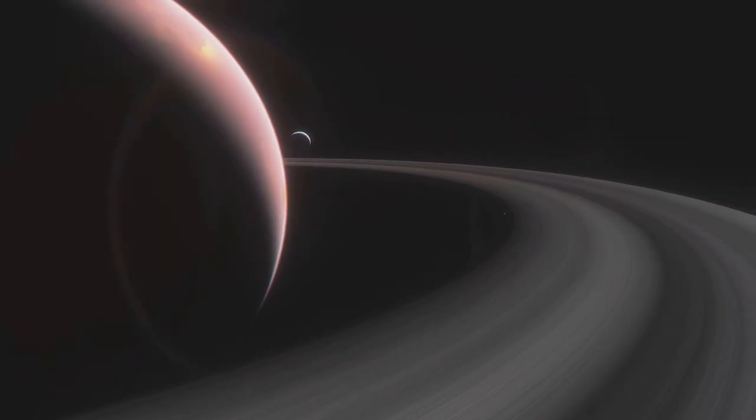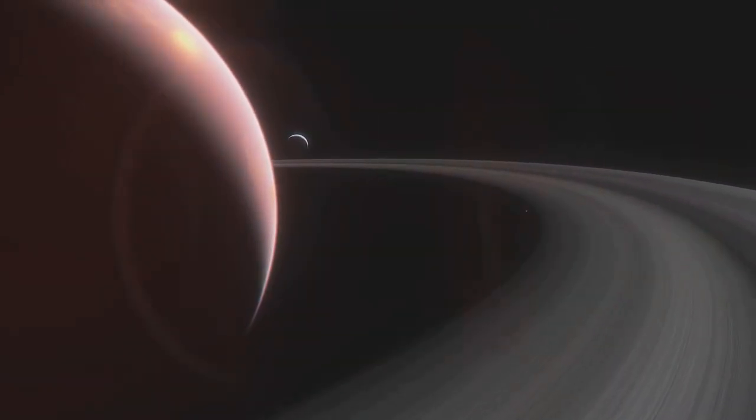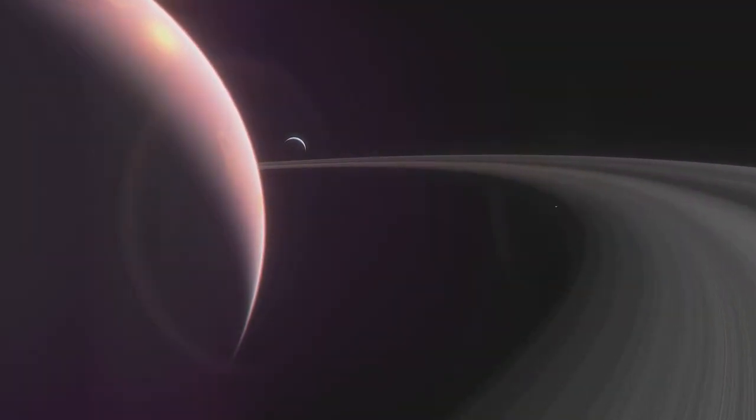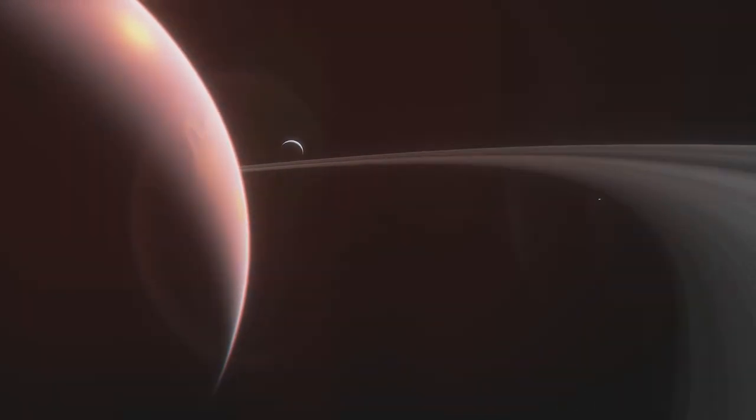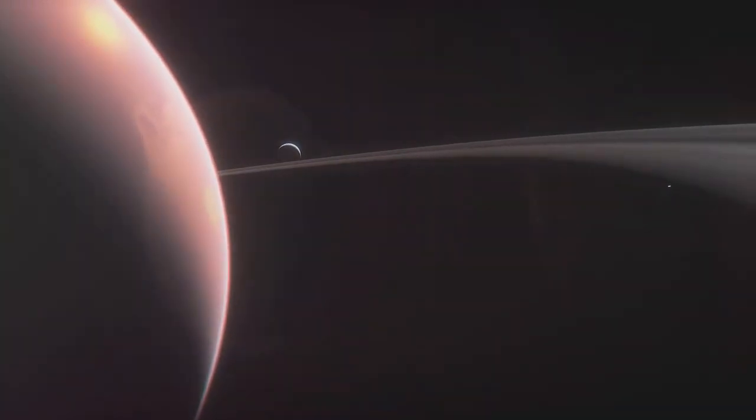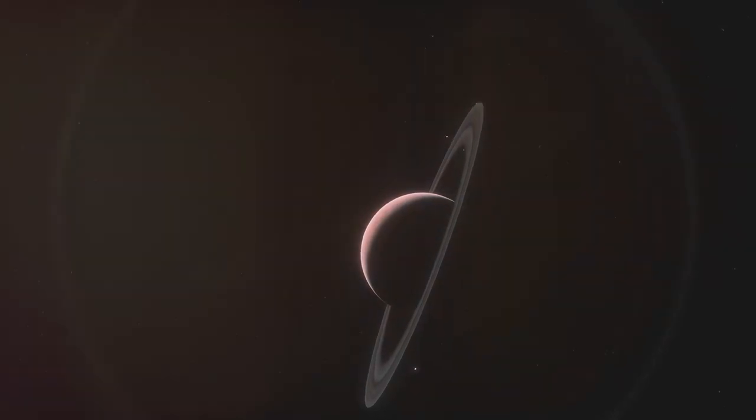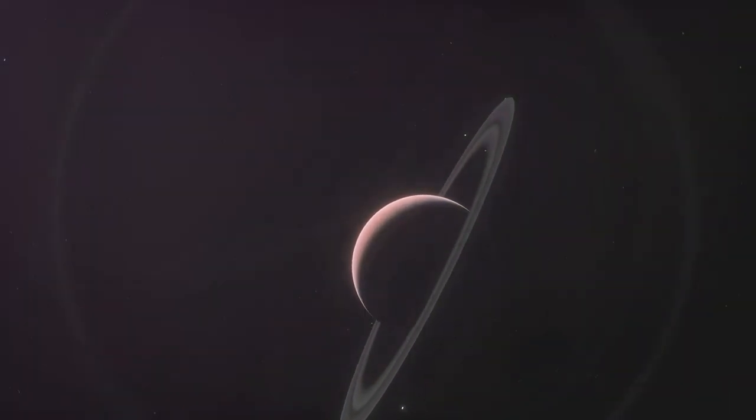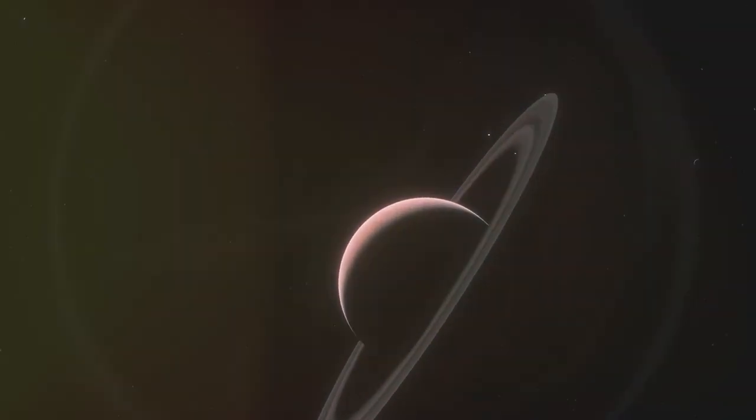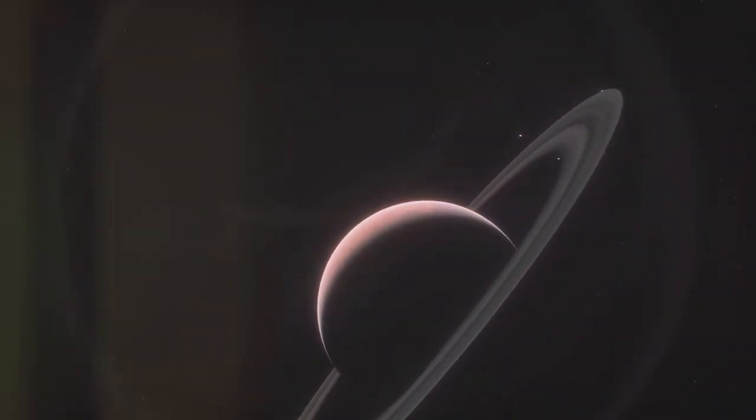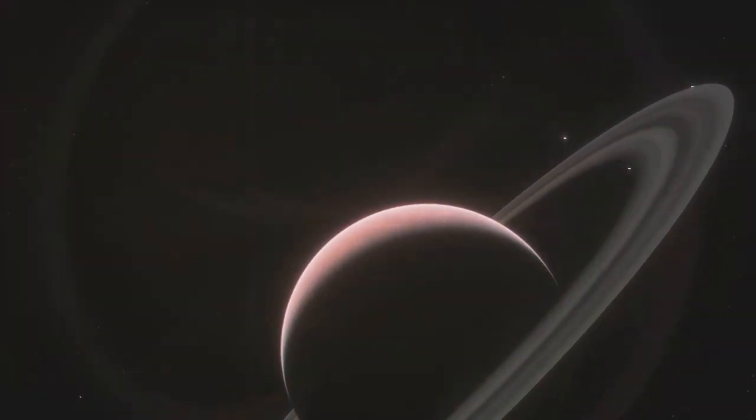But the story doesn't end there. With the advent of powerful telescopes like the Hubble Space Telescope and the Kepler Space Observatory, we've been able to identify ring systems around exoplanets, planets outside our solar system.